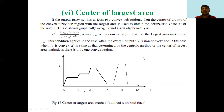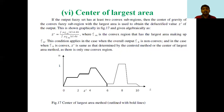In the center of largest area method, if the output fuzzy set z has at least two convex subregions, then the center of gravity of the convex fuzzy subregion with the largest area is used to obtain the defuzzified value. z* = integral of mu_cm(z) · z · dz divided by integral of mu_cm(z) · dz, where cm is the convex region with the largest area of ck. This condition applies when the overall output ck is non-convex. When ck is convex, z* is the same as determined by the centroid method.